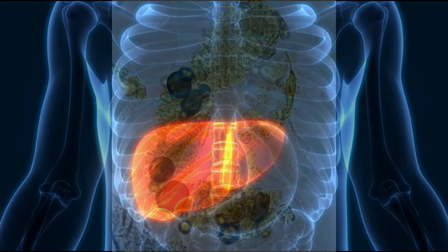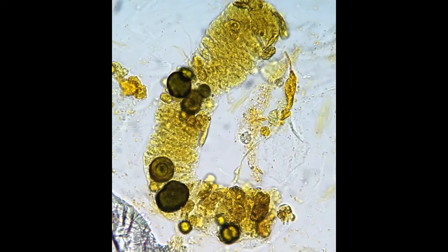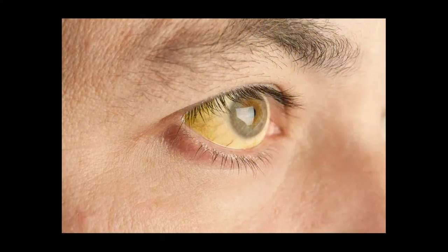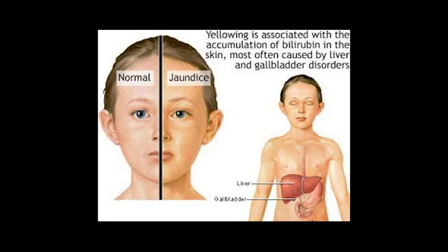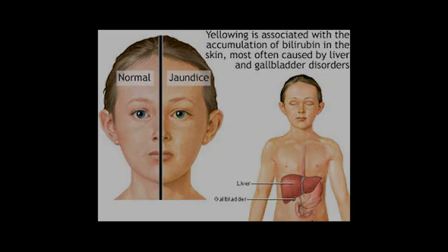The kidneys are responsible for the yellow color of your urine. If the process is interrupted in any way — perhaps by liver damage or disease — then excess bilirubin ends up in the bloodstream, leaving a yellow color to the skin and in the eyes.